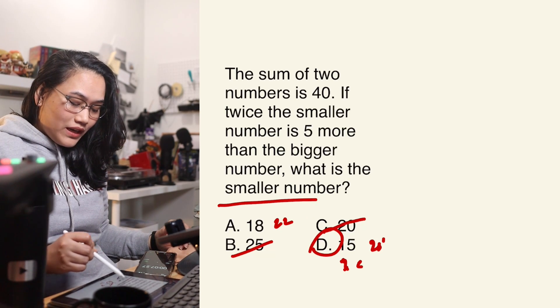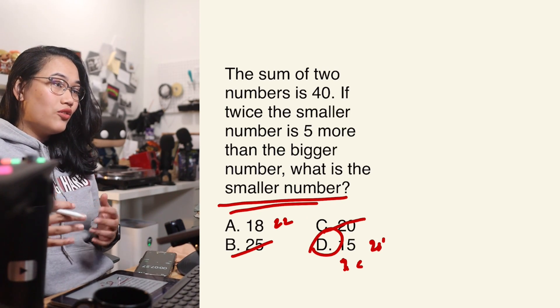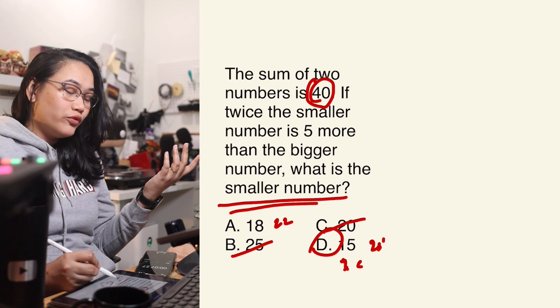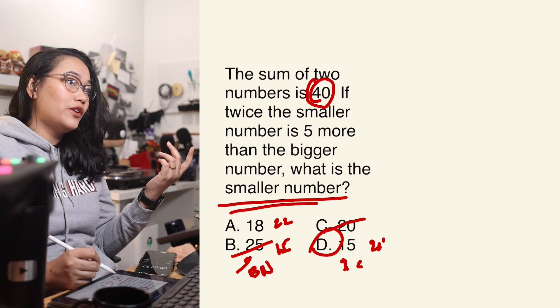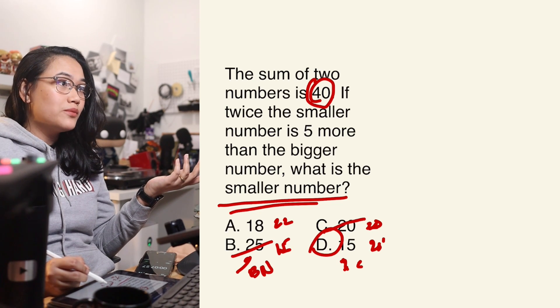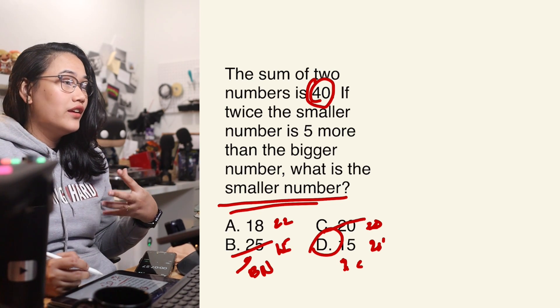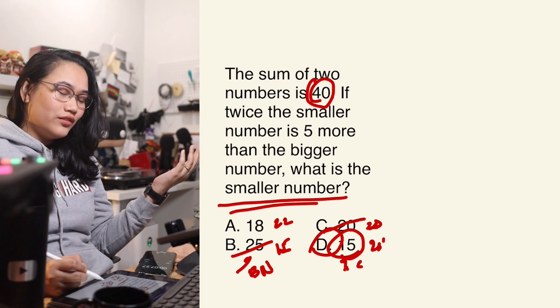What I did was recognize that the question asks for the smaller number, meaning its pair — whatever you add to it to reach 40 — needs to be bigger. Option 25 is already out because its pair would be 15, making 25 the bigger number. Option 20 is out because both would be equal — no bigger or smaller. So it's either 18 or 15. Just by checking in my head: 15 times 2 is 30, and 25 plus 5 is also 30 — equal, so the answer is 15. Done.